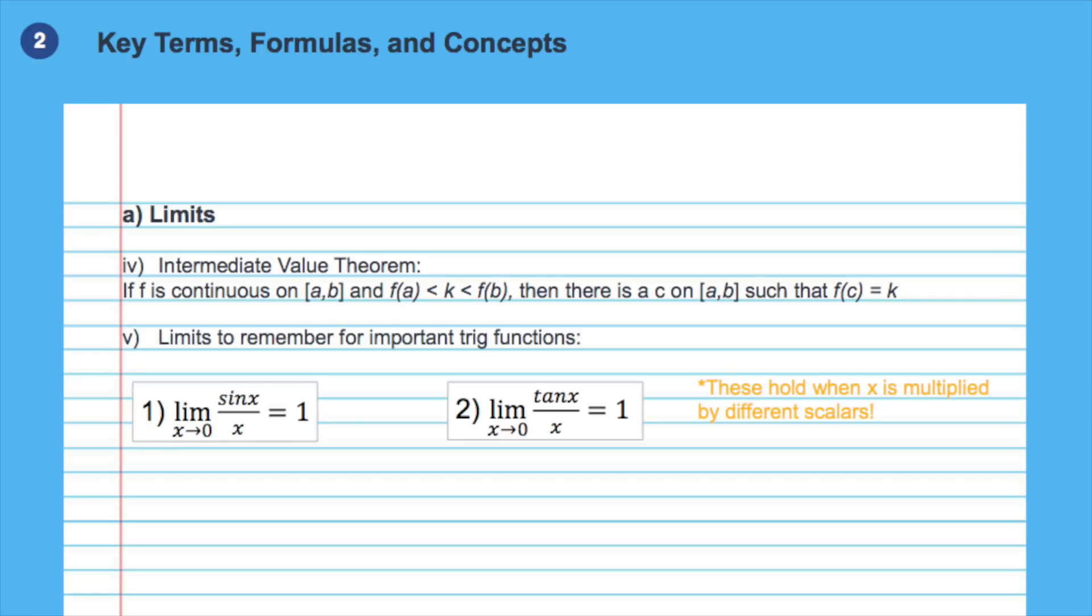It's useful to remember that the limit of sin x over x when x is going to 0 gives us the ratio of x's coefficients, in this case 1. The same trick also holds for tan of x.